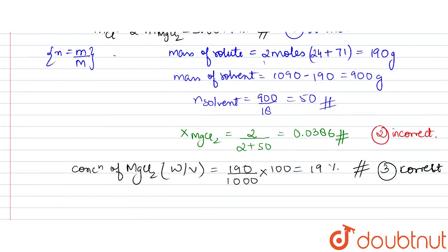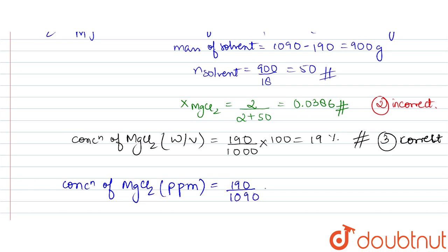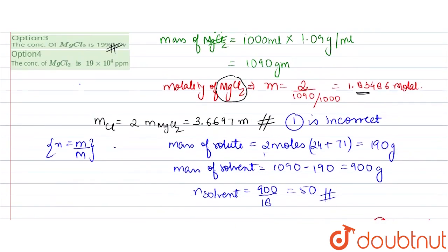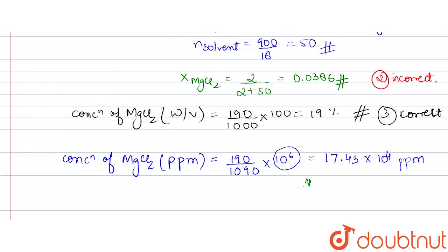For Option 4, concentration in ppm = (mass of solute ÷ mass of solution) × 10⁶ = (190 ÷ 1090) × 10⁶ = 17.43 × 10⁴ ppm. Option 4 states 19 × 10⁴, which does not match, so Option 4 is also incorrect.